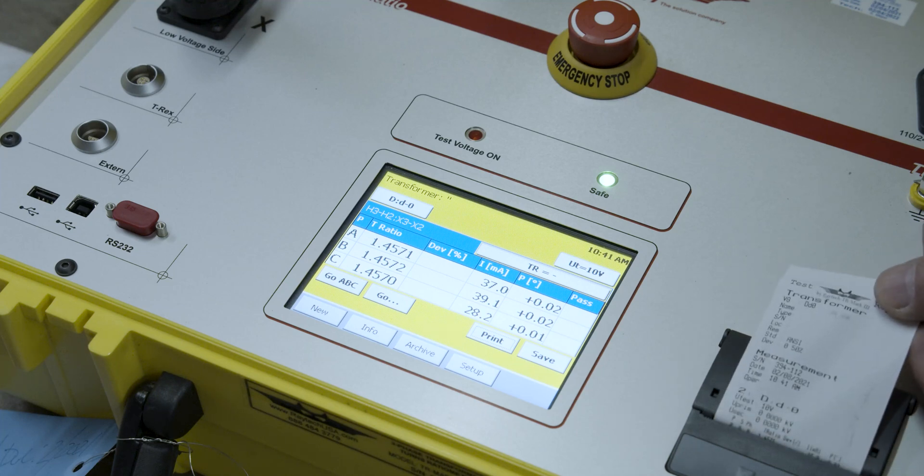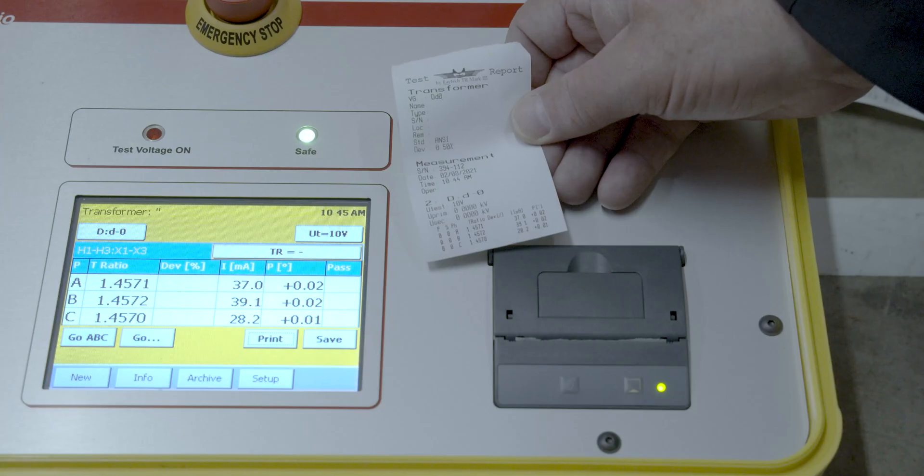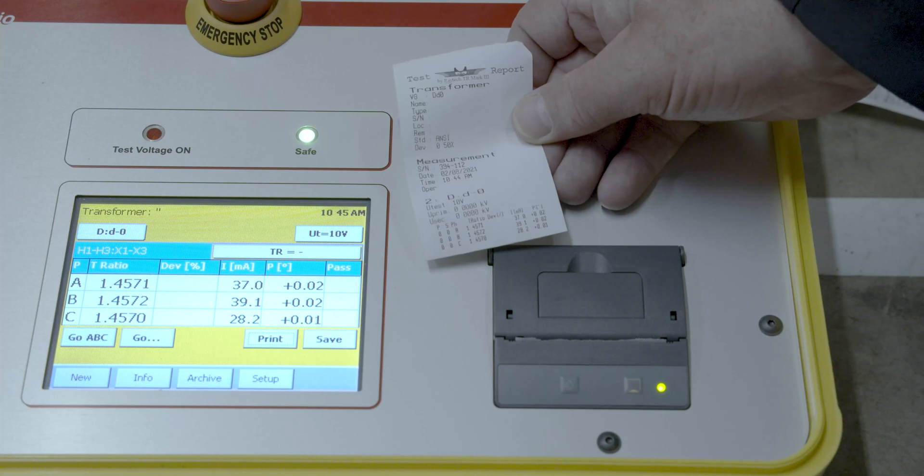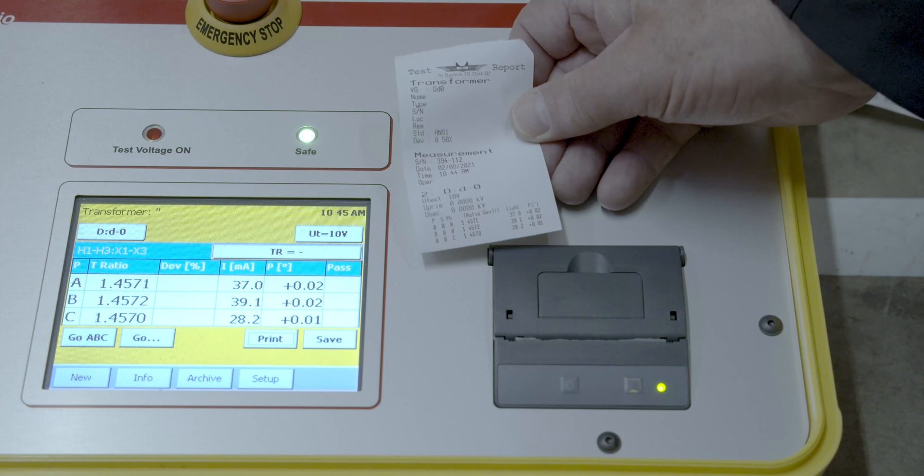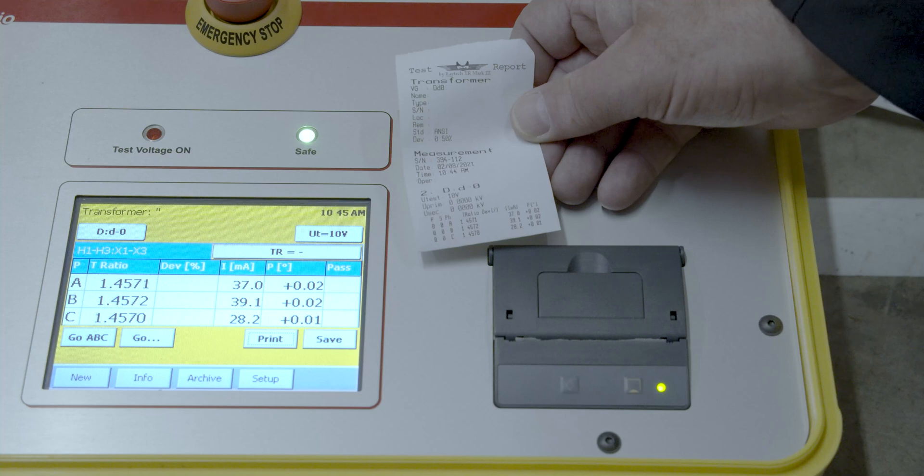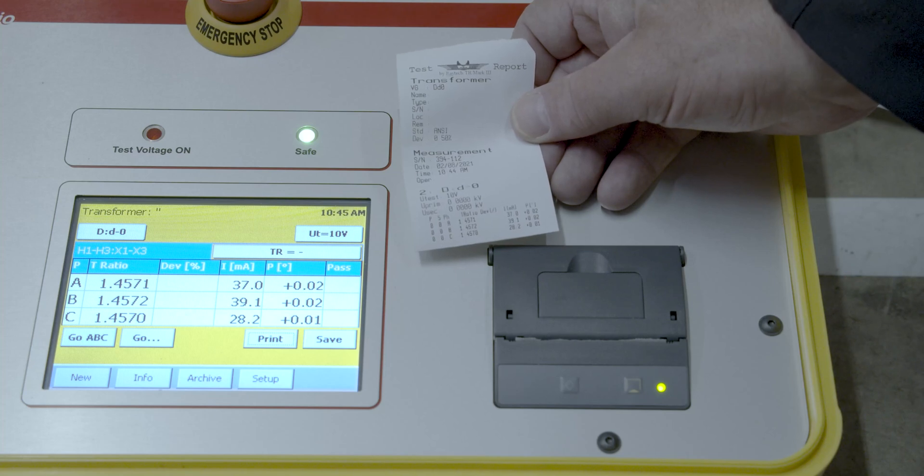You'll notice if you can look at the indications there we've preserved the test results as well as any information that we put in relating to this test. If you wanted to you could have put in the primary and secondary voltages and it would have calculated a percent deviation. What's acceptable is 0.5 percent.